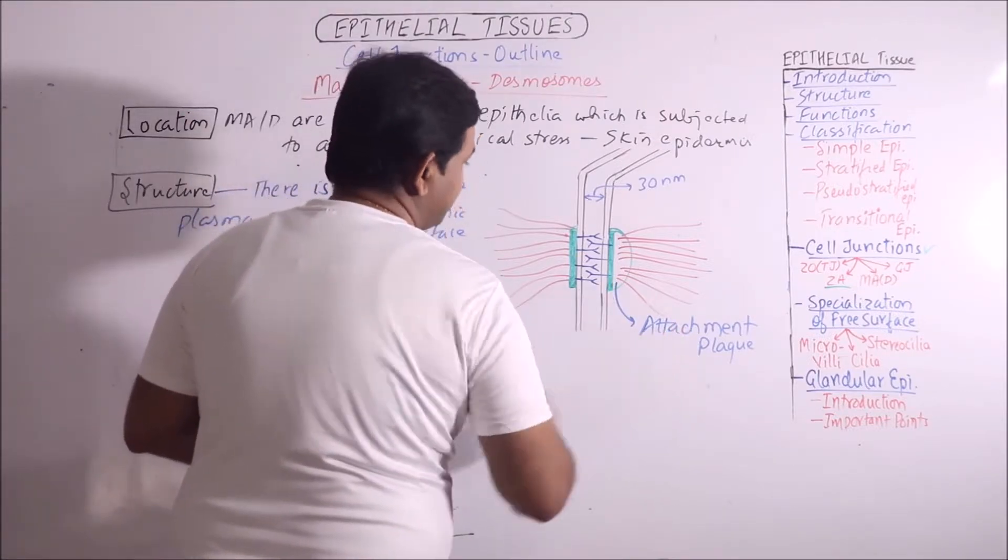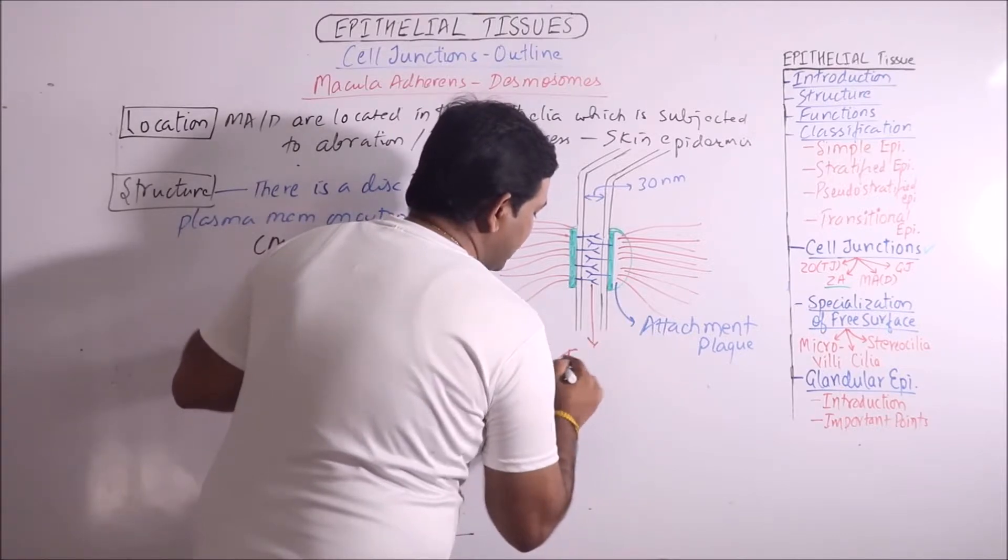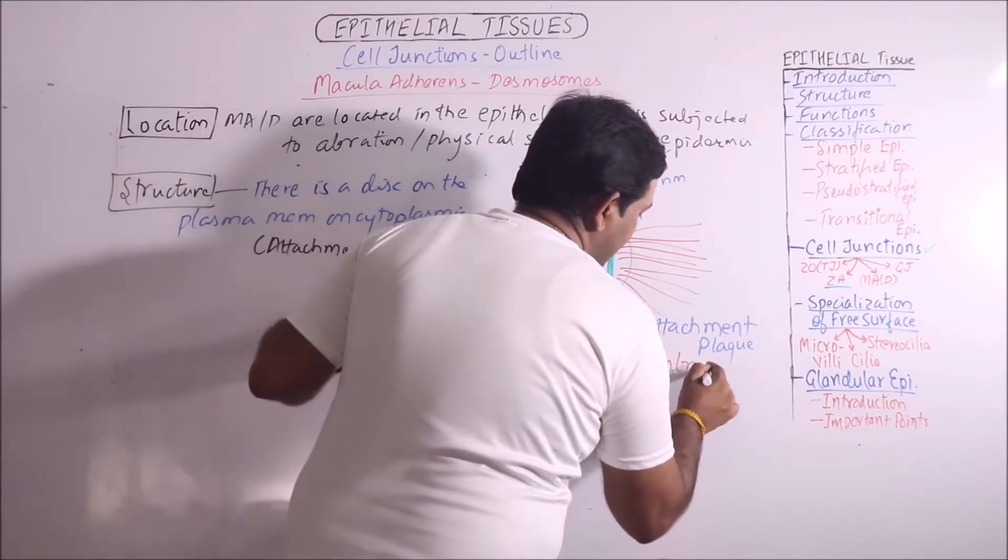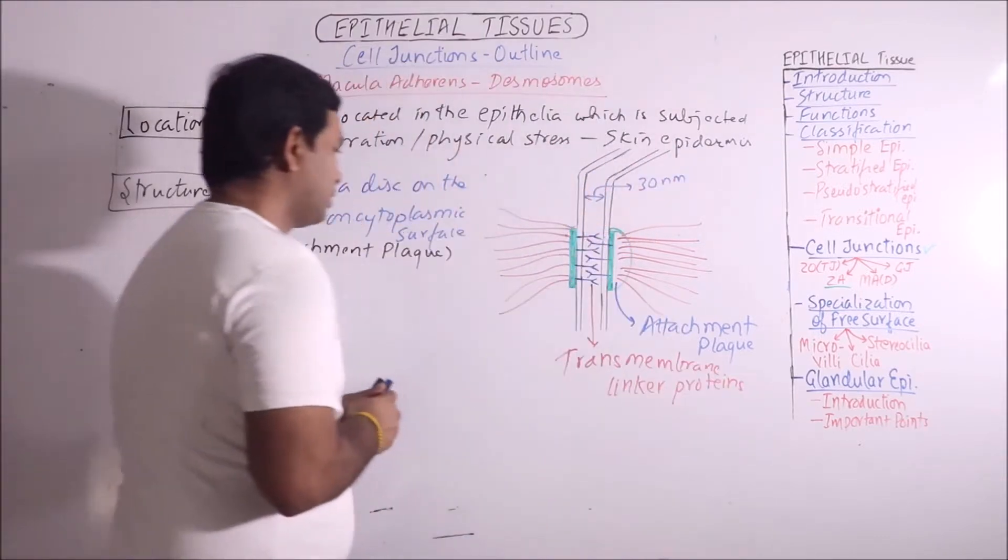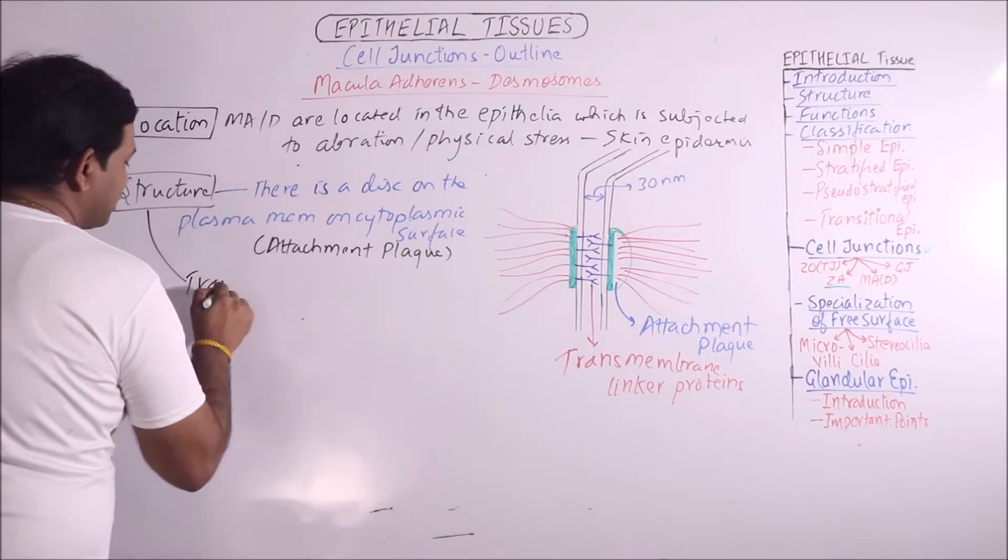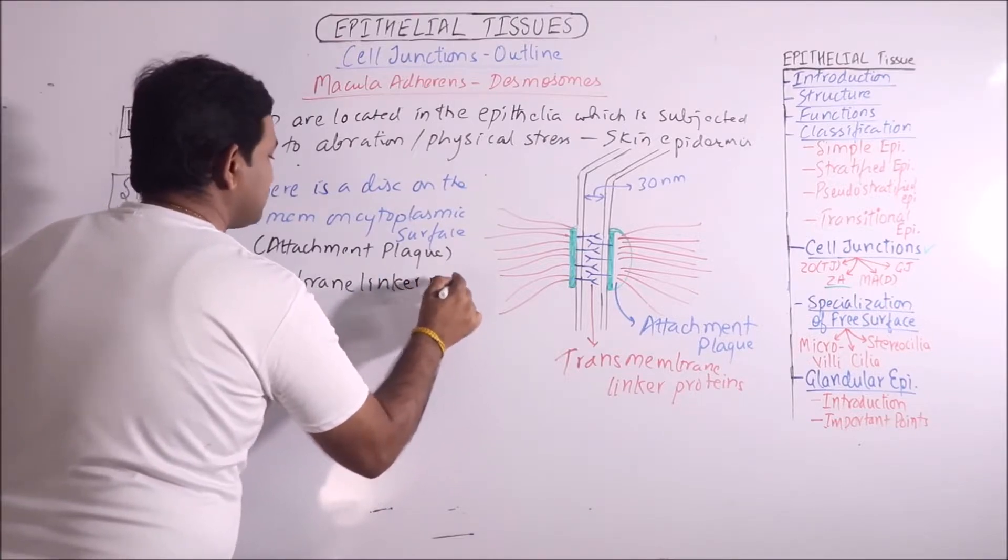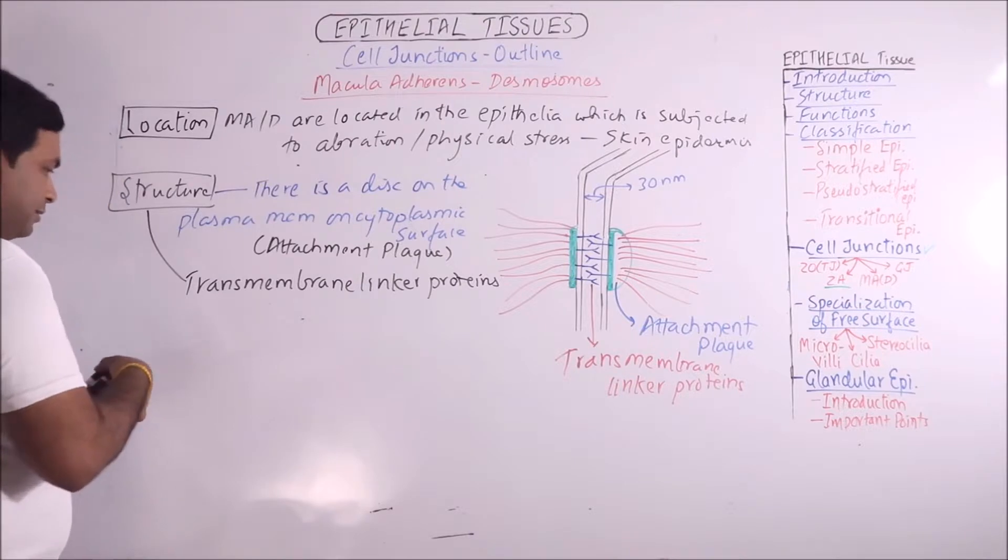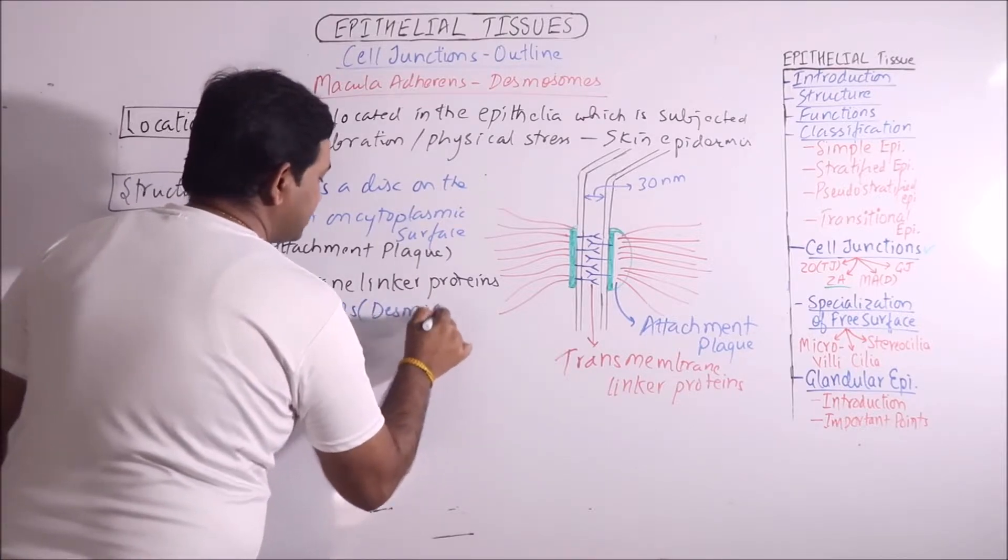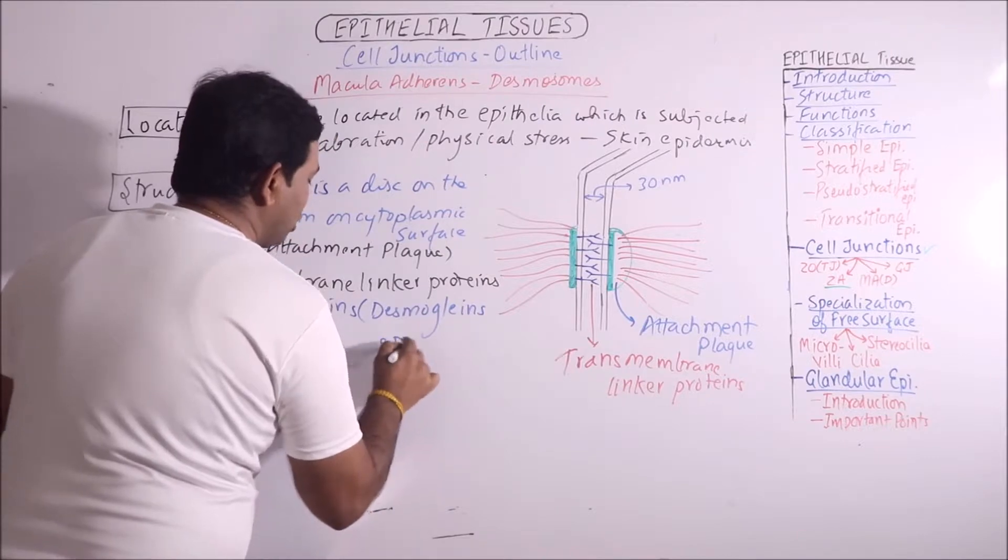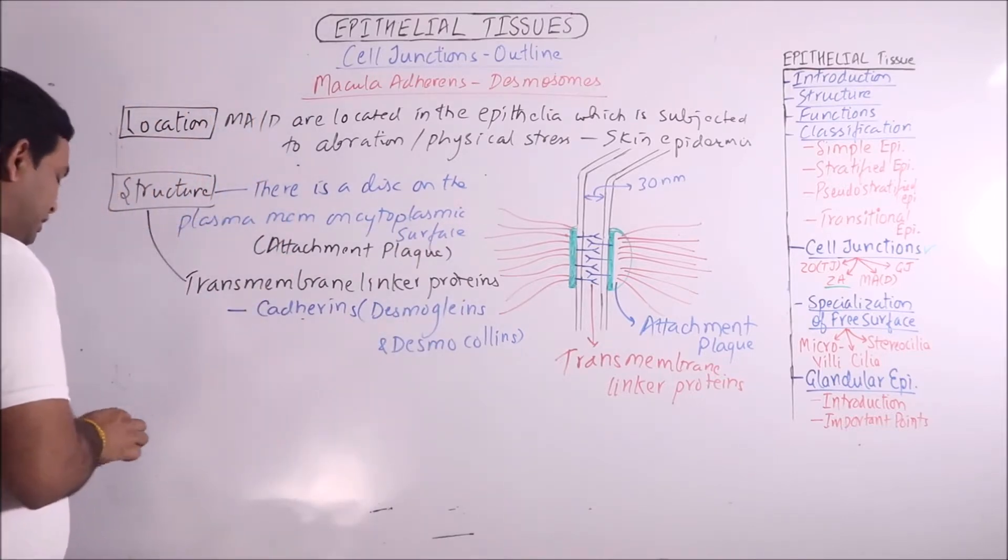Then from this attachment plaque some transmembrane linker proteins are coming out. These are transmembrane linker proteins. Second component is transmembrane linker proteins like cadherins, for example desmoglenes and desmocolins. These are connecting the two attachment plaques of adjacent cell surface.